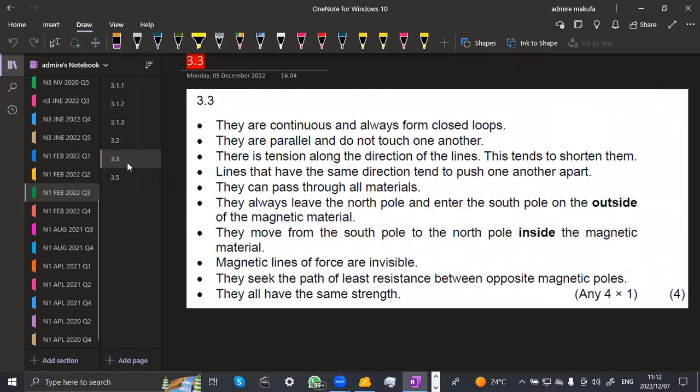Lines that have the same direction tend to push one another apart. It's just for you to pick any three or any four from these. They always leave the north pole and enter the south pole on the outside of magnetic material. They move from south pole to the north pole inside the magnetic materials. They can ask you where do we have the flow of the magnetic material. Is it from south to north or from north to south? This one is actually south to north.